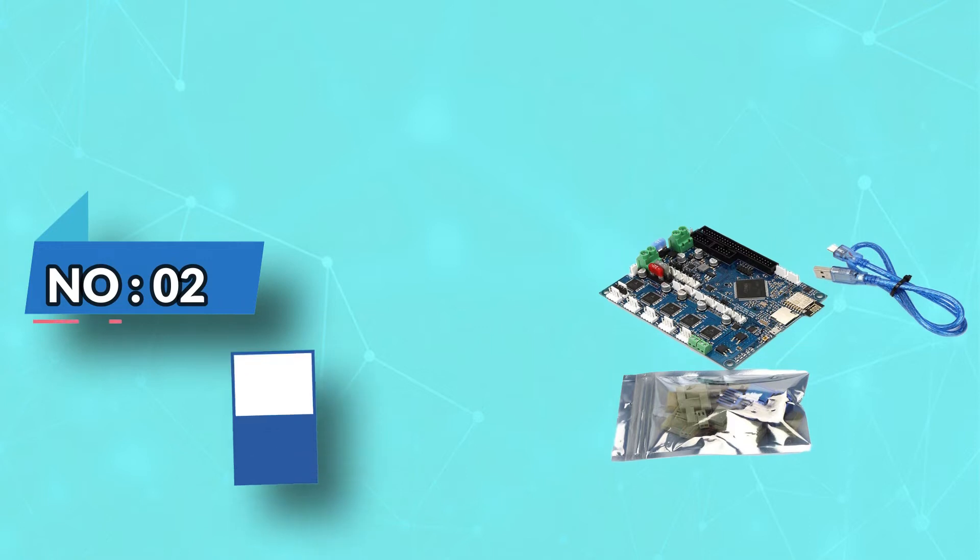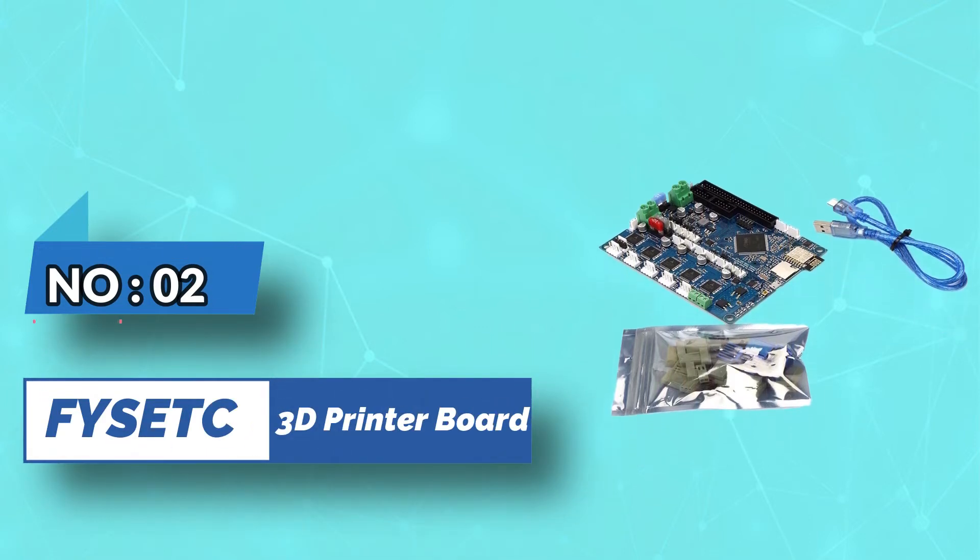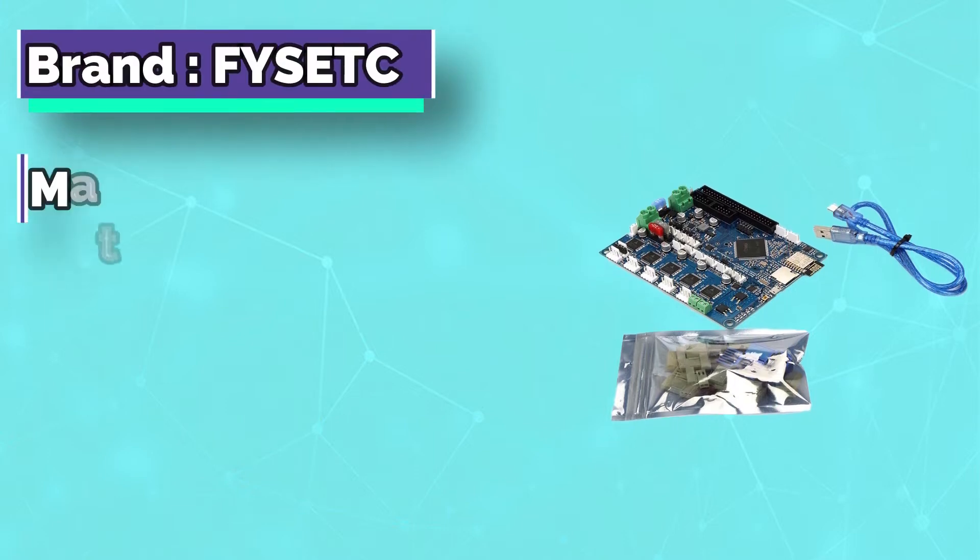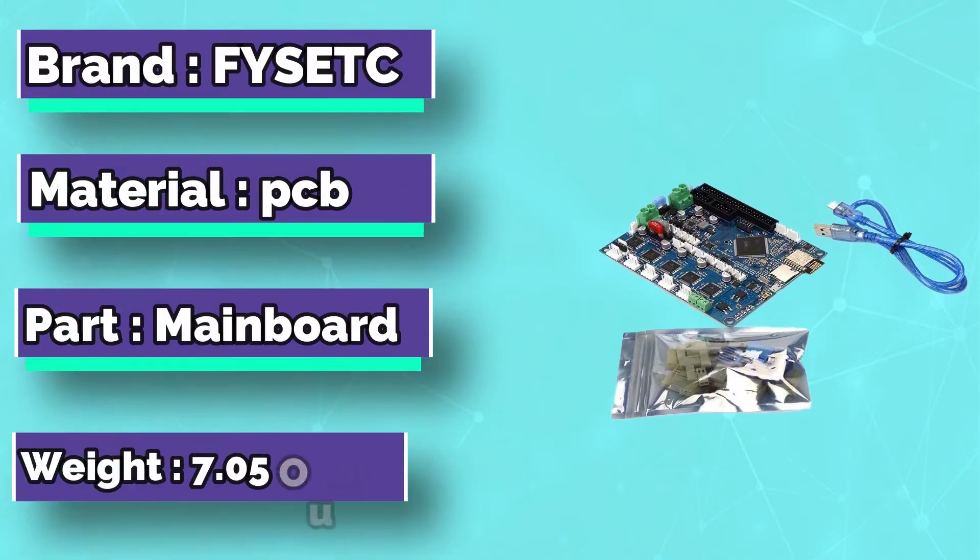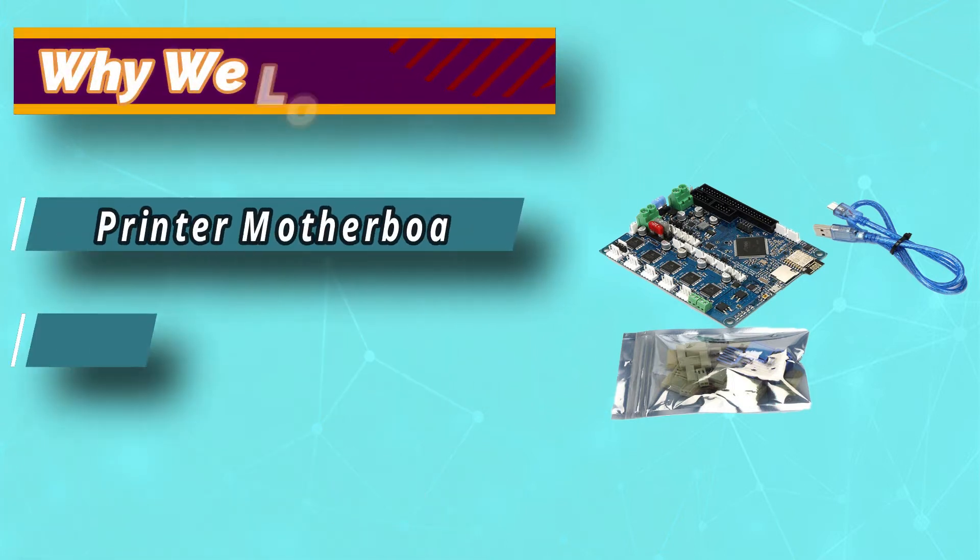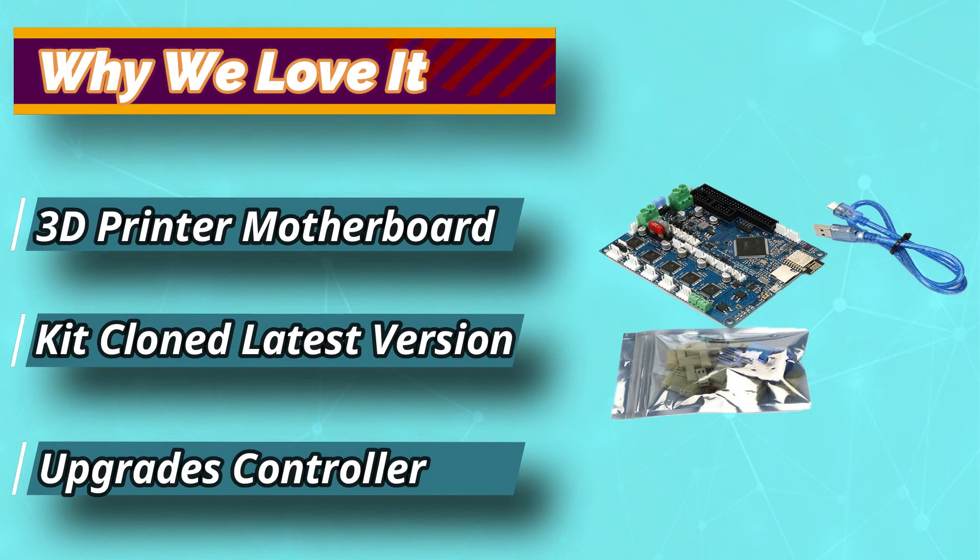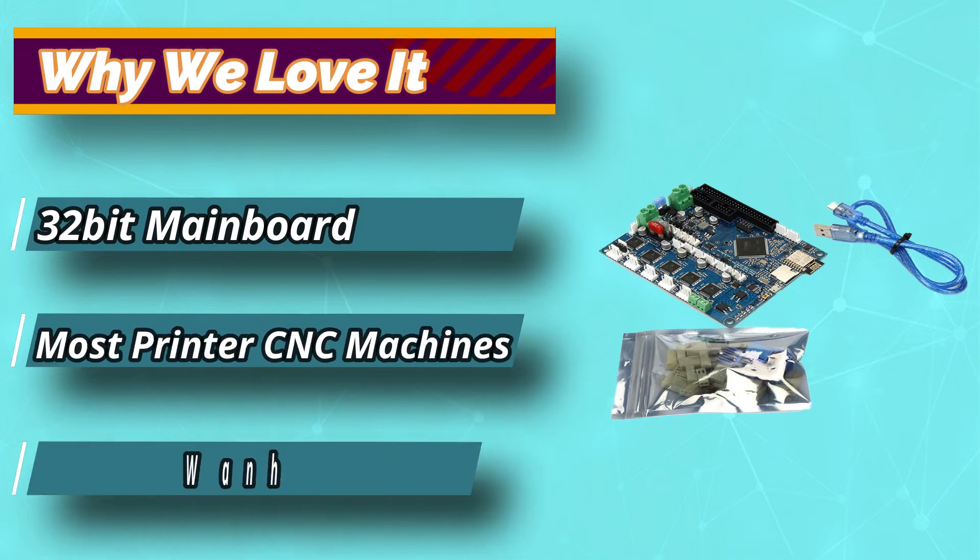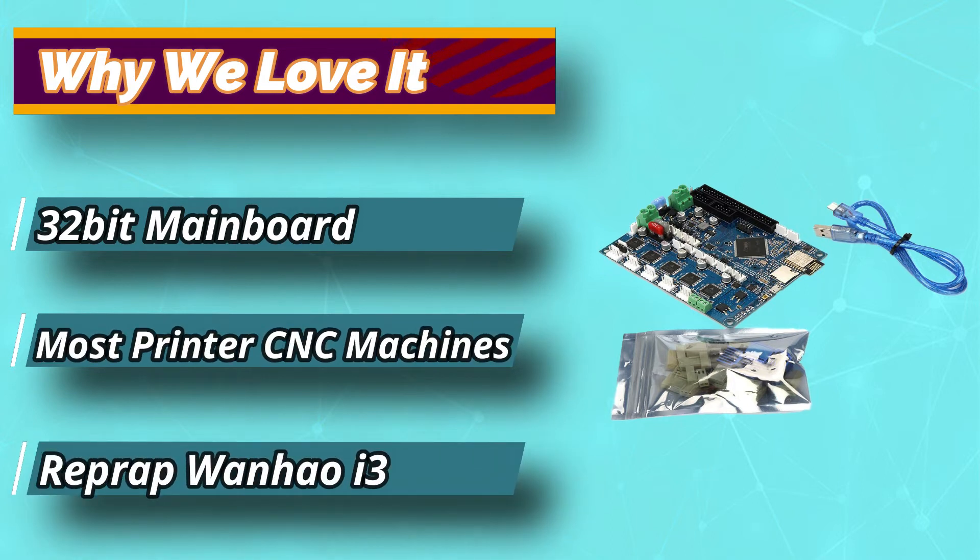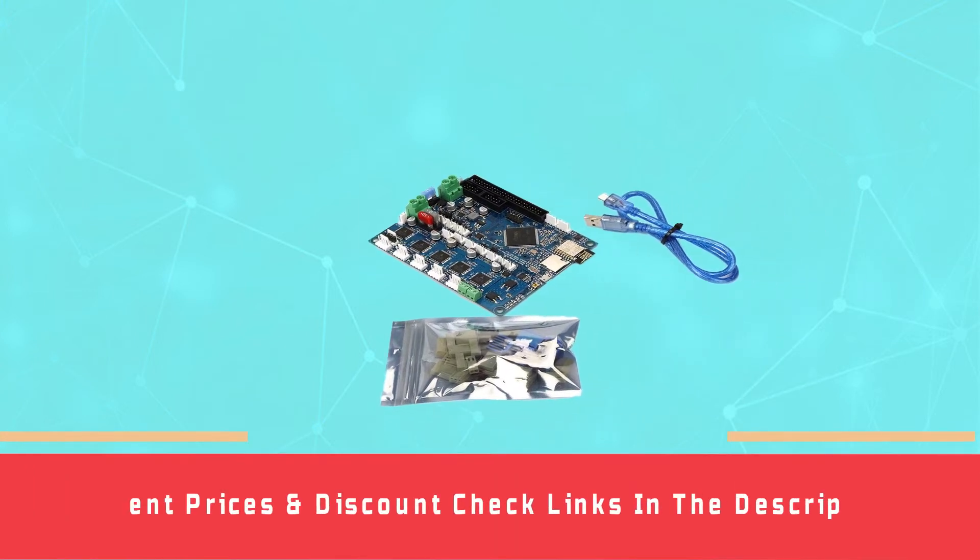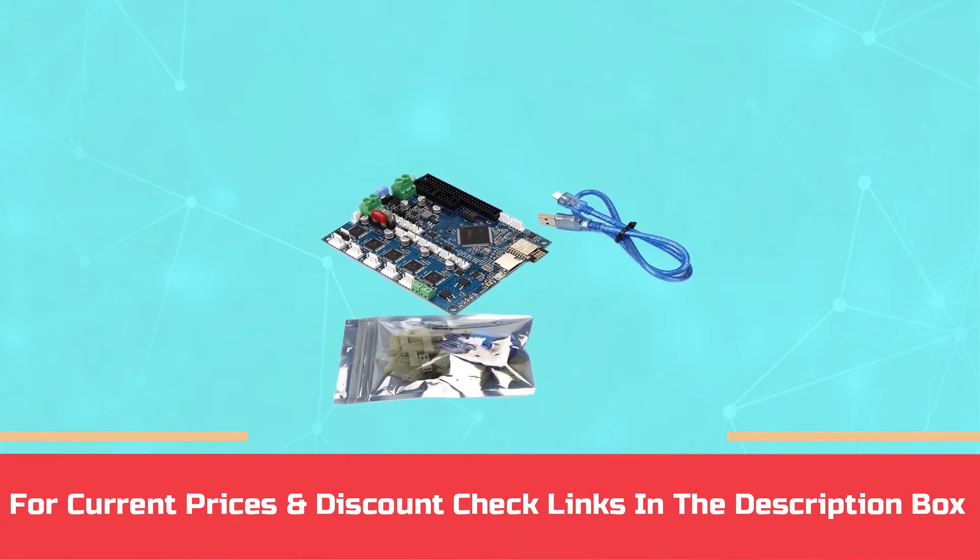Number 2: Fysetc 3D Printer Board. If you have some experience in 3D printing or are looking to upgrade the 3D printer board of your machine, try the Fysetc 3D printer motherboard kit. This 32-bit 3D printer controller has been equipped with 256 microstepping. You can never go wrong with this controller as you can use 12 or 24 volts for power input. For current prices and discounts, check links in the description box.